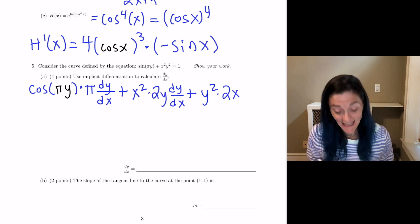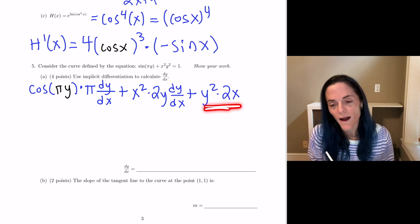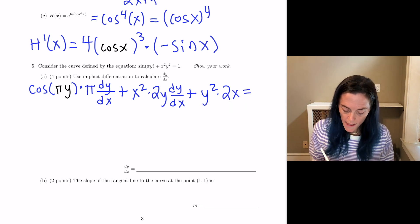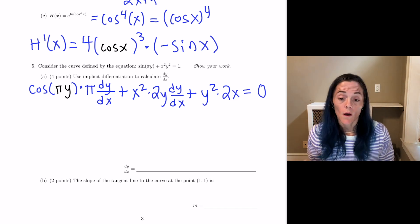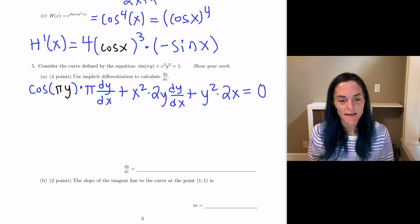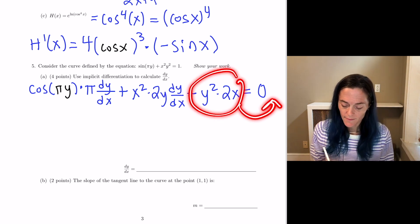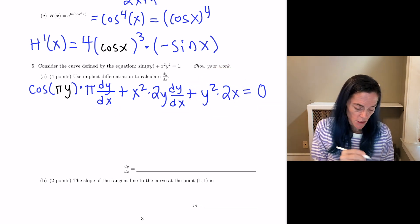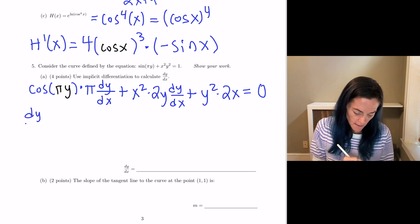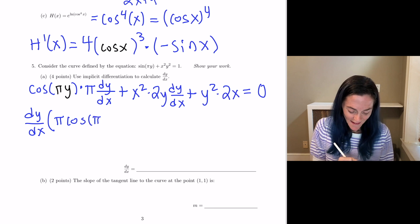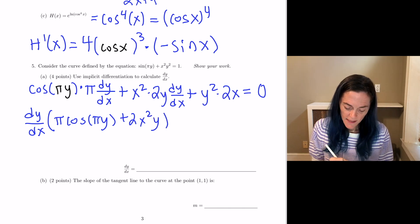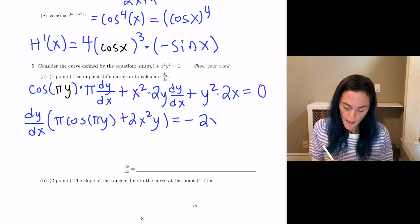Now, here, do not multiply by dy dx on this term, because I did not differentiate a y. What I differentiated was x squared. Okay, then we put an equal sign, the derivative of 1 is 0. Okay, I'm trying to solve for dy dx here. So, I'm going to move this term to the right hand side of the equation, and then I will factor out dy dx from these two terms. So, we will have dy dx times, we have pi cosine pi y plus 2x squared y, and this equals minus 2xy squared.